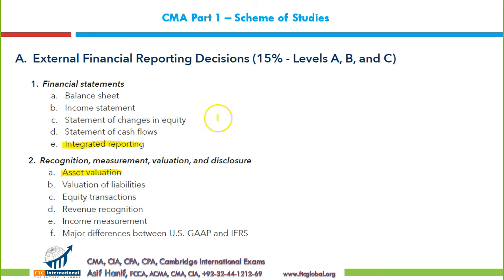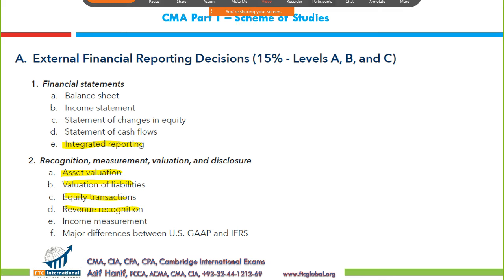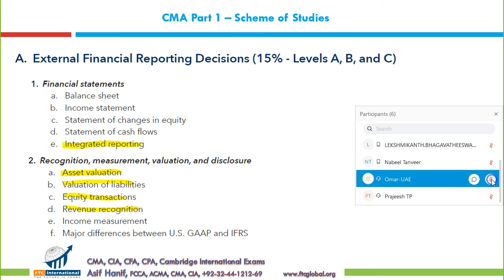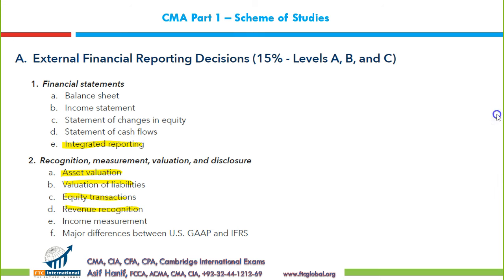Integrated reporting is a new thing added in January 2020. Other areas include asset valuation, investments, valuation of liabilities, equity transactions, and revenue recognition — a new standard issued jointly by IFRS/IASB and US GAAP. Income measurement is also covered, along with some major differences between US GAAP and IFRS.